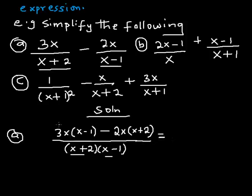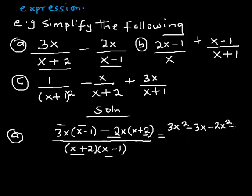Now I expand the numerator. I'll put the terms in brackets: 3x multiplied by x gives me 3x²; 3x multiplied by −1 gives me −3x. Then don't forget the minus sign in front — minus 2x multiplied by x gives me −2x²; and minus 2x multiplied by 2 gives me −4x.